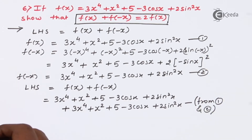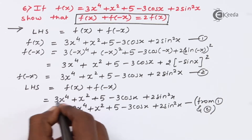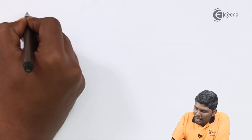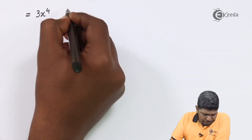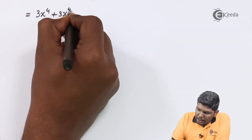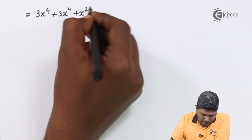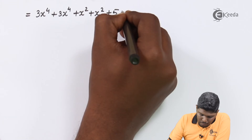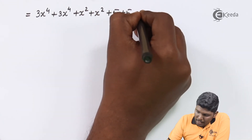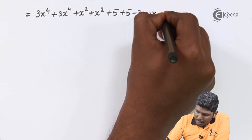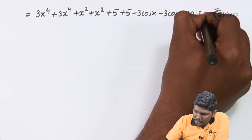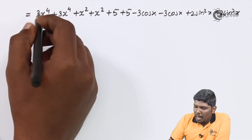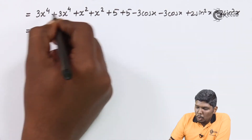Now let us collect the terms of the same type. We have 3x⁴ plus another 3x⁴, then x² plus another x², then 5 plus another 5, then minus 3cos(x) with another minus 3cos(x), and plus 2sin²(x) with another plus 2sin²(x). We have rearranged the terms, grouping same terms together.